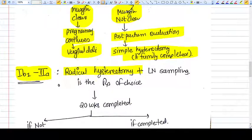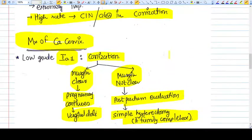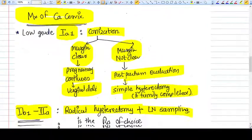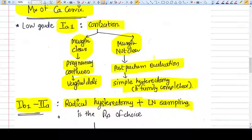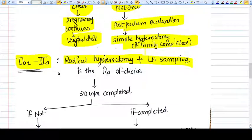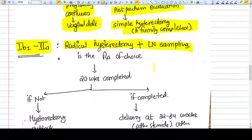For stages 1b1 or 2a, you need to go for radical hysterectomy. In these higher stages, you need radical hysterectomy and lymph node sampling. With low grade cervical cancer (stage 1a1), lymph node metastasis is rare, so we do simple hysterectomy without lymph node sampling.